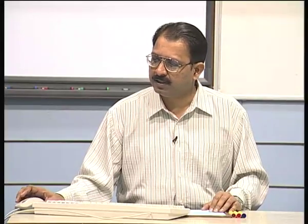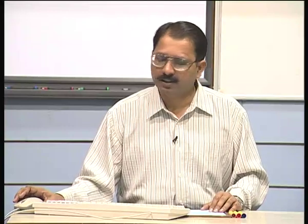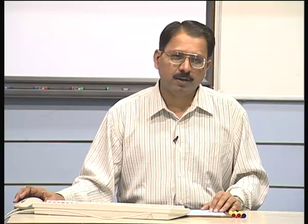Similarly, a Bezier surface patch — if you recall, a Bezier curve is defined by n+1 control points. Since it is biparametric, you have to give a number of points in both directions. m need not be equal to n; for example, five control points in one direction and four in another. The same is true with the B-spline surface patch, where you define m by n points but the order is defined separately by giving values of k and l, as used in B-spline curves.